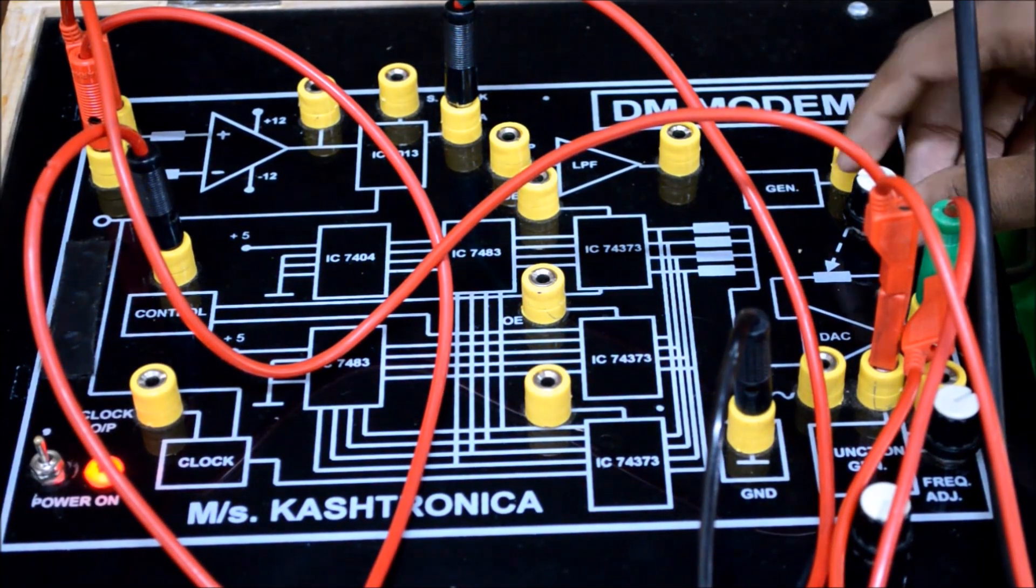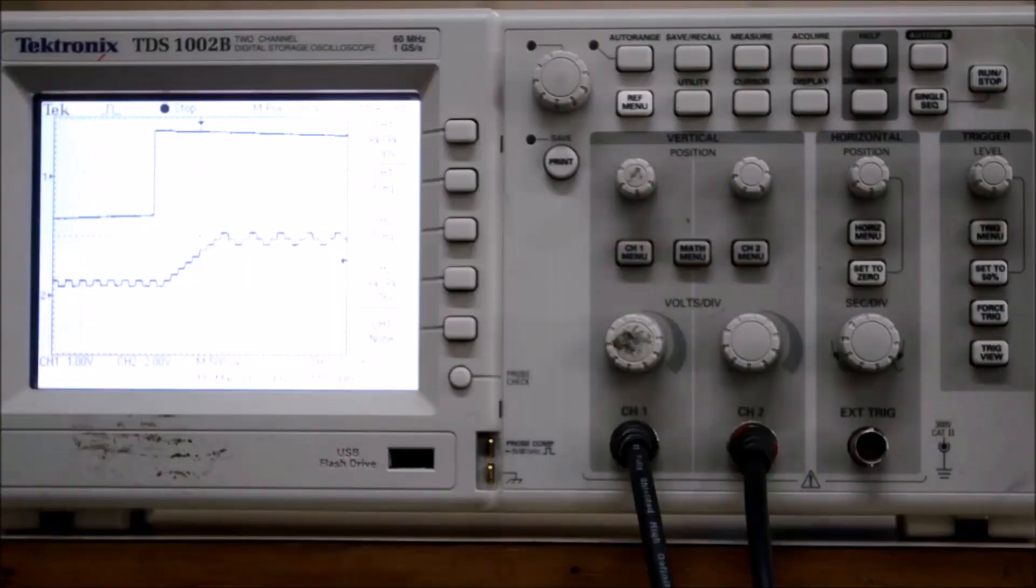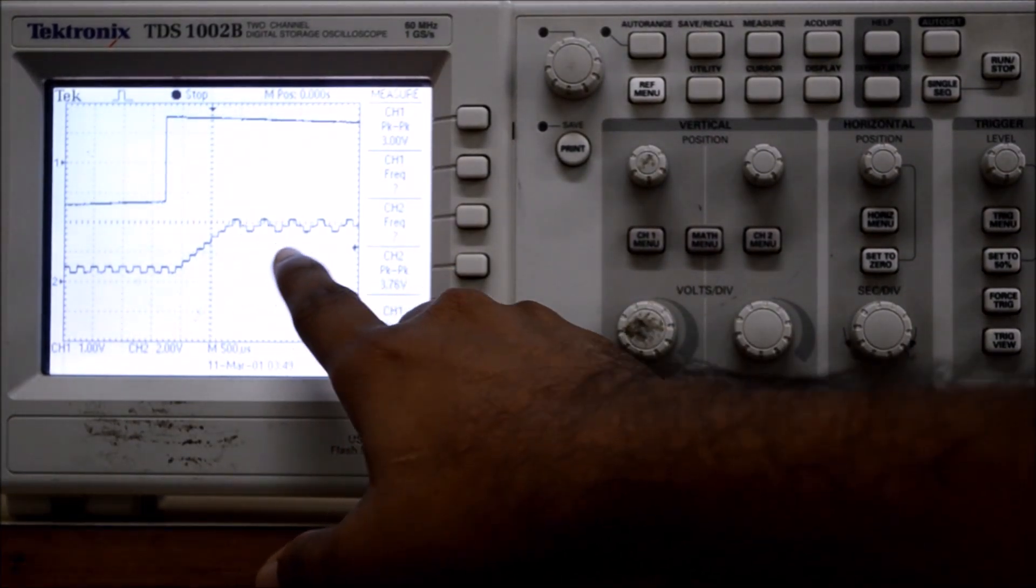If you move the step size pot on top of DAC, now you can see double step hunting of the DAC output as follows.